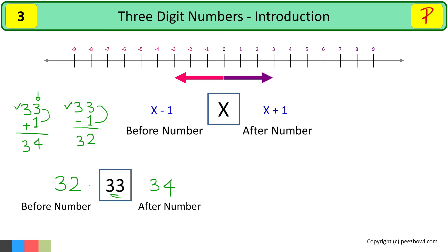One more example. Here we need to find out before and after number of 20. To get after number we need to add 1 to 20. And to get before number we need to subtract 1 from 20.